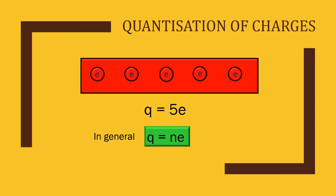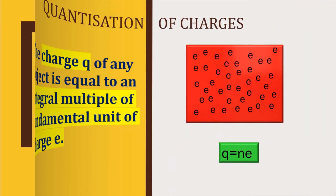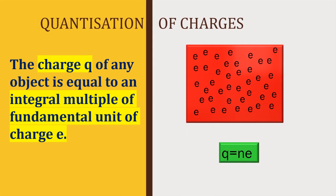Quantization of charges: if there are five electrons in an object, we say that q is equal to 5e. In general, if there are n number of charges, we say that q is equal to ne. We can define quantization of charges like this — the charge q of any object is equal to an integral multiple of the fundamental unit of charge e.